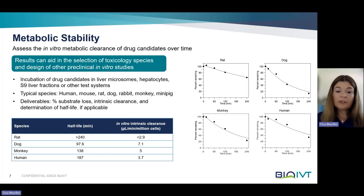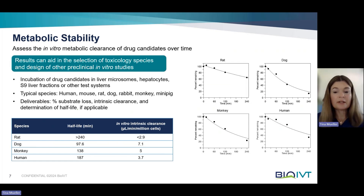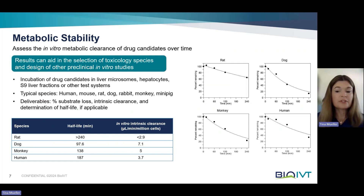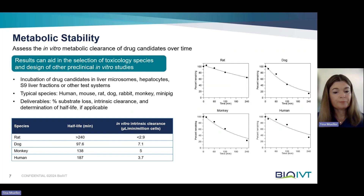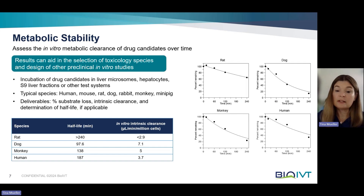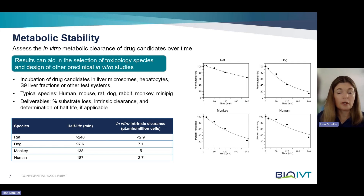In a metabolic stability study, drug candidates are incubated in a test system — most commonly liver microsomes and hepatocytes, but there are others such as S9 or cytosolic fractions. Typically, metabolic stability is assessed in different species, and most often it is evaluated in human, mouse, rat, dog, rabbit, monkey, and/or minipig.